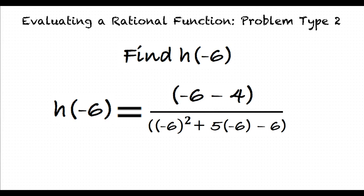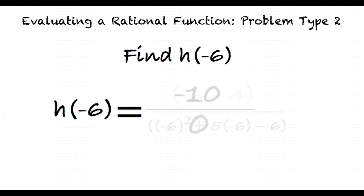Now we need to simplify our numerator and denominator by multiplying, adding, and subtracting. This results in h of negative 6 equals negative 10 over 0. Wait, that doesn't look right. Good catch. You solved the problem correctly, but we must note that the denominator is 0. This means that we are dividing by 0, and division by 0 is undefined.